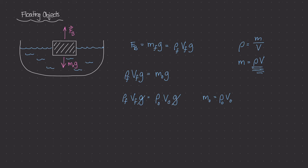The gravitational constant g cancels from both sides of the equation. Solving for V_F, the volume of fluid displaced, we get: V_fluid equals the mass density of the object divided by the mass density of the fluid, times the volume of the object. This is a pretty cool relationship — for objects not fully submerged, the volume of fluid displaced equals the ratio of the object's mass density to the fluid's mass density, multiplied by the total volume of the object.